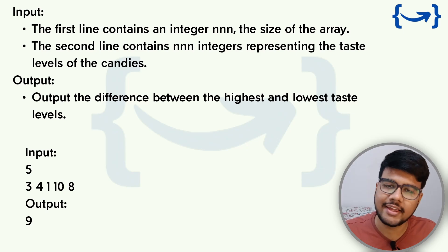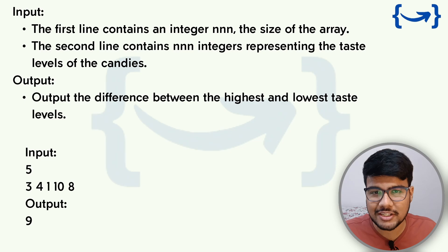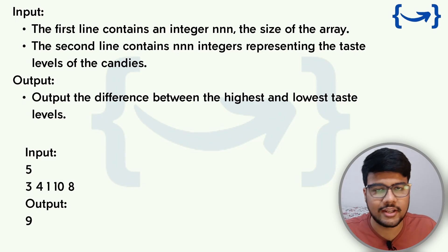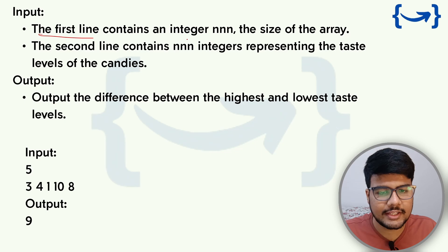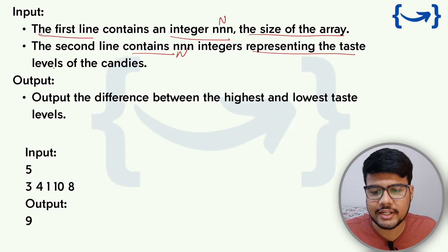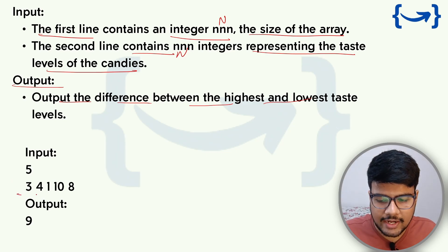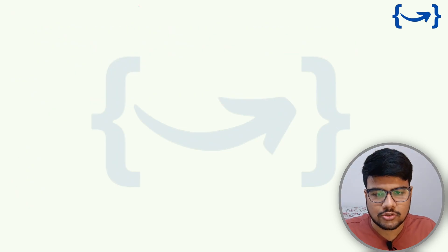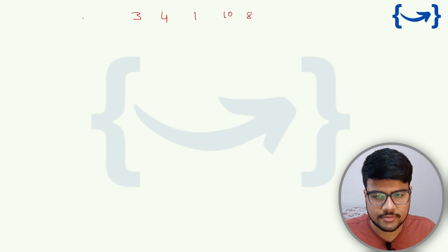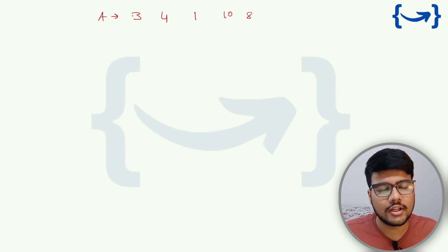I hope the question is clear. Capgemini does focus on question quality — the explanation pretty much states everything you need to write in the code. The first line contains an integer N, the size of the array. The second line contains N integers representing the taste level of the candies. Output the difference between the highest and the lowest taste levels. So the given array is 3, 4, 1, 10, 8 — that's array A with N elements.